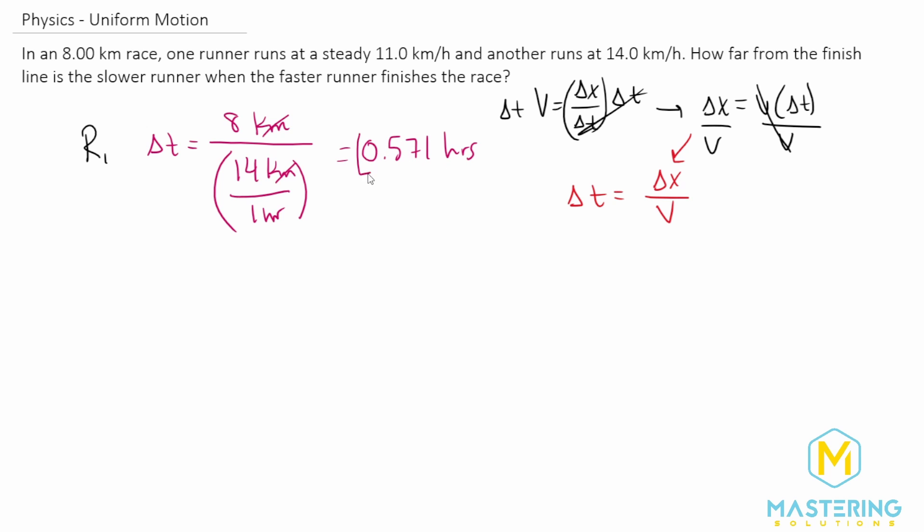All right, so this is how long it took runner one to run the race. And so now what we're going to do is use this time with the velocity of the slower runner to figure out how far they went in that same amount of time. Because if you think about it, at that time, that's when the faster runner is done. Where was the other runner? That's what we're trying to find here.